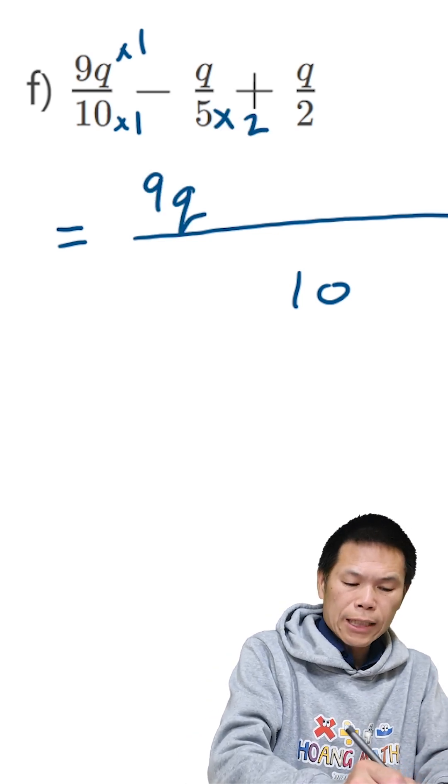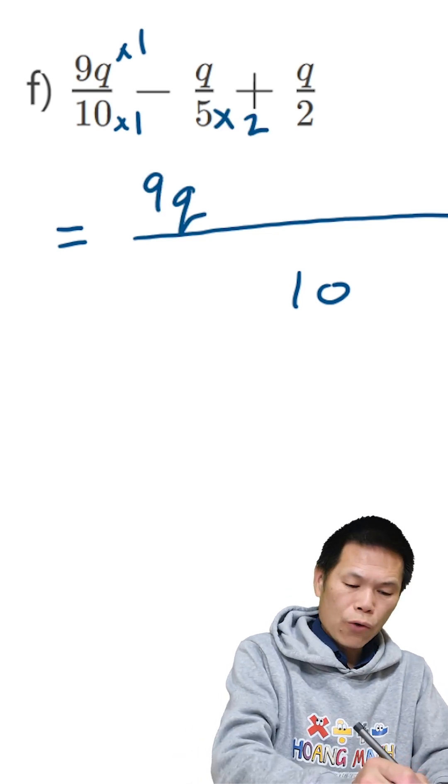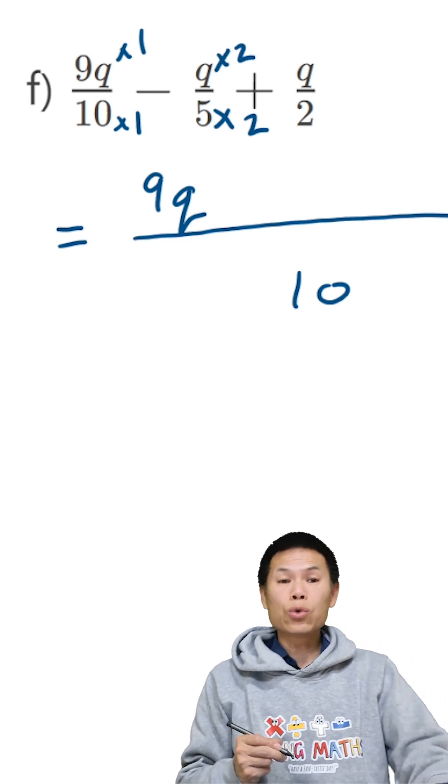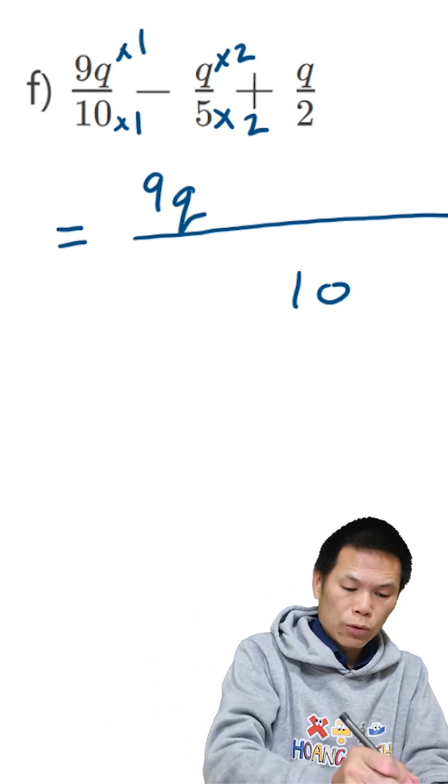And from 5 to 10, I times this by 2. So therefore this times by 2. So 2 times q is 2q. So we minus 2q.